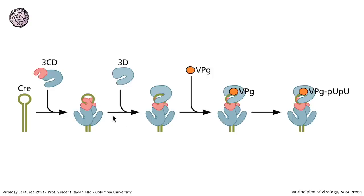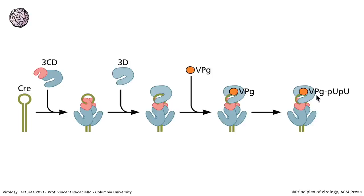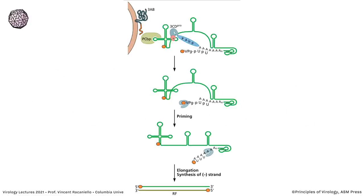The first thing that has to happen is to make the primer for RNA synthesis. The primer is VPg with two U's on it, which is used by the polymerase to copy the viral RNA. The Cre stem-loop, somewhere in the middle of the genome, binds a couple of polymerase molecules. The loop has a stretch of A's at the top, and the polymerase reads those and attaches two U's onto VPg. So VPg-UU can then prime RNA synthesis.